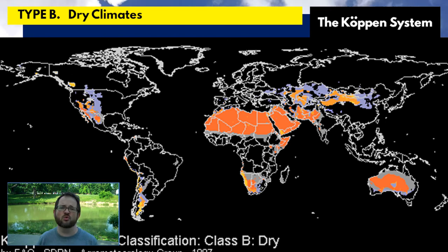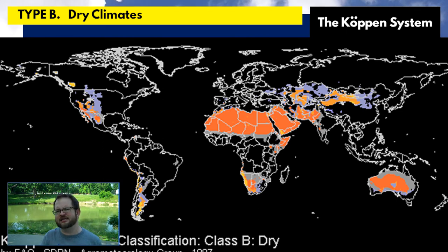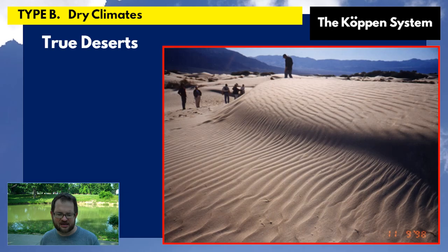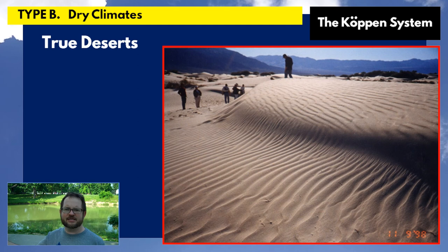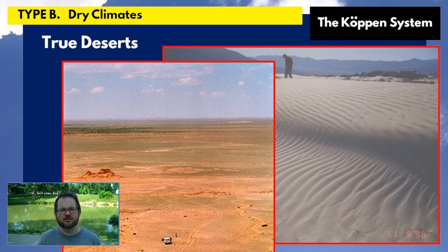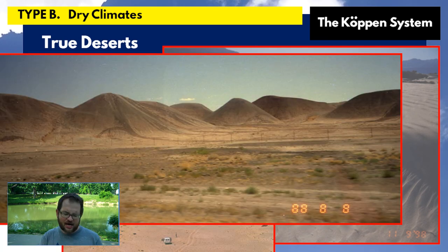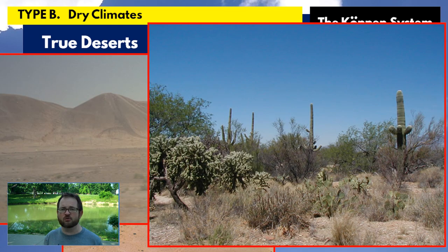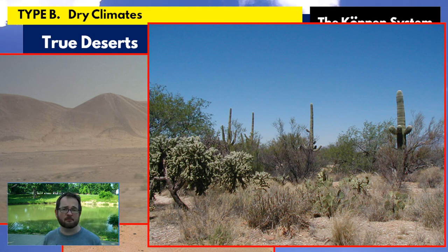There are two main kinds of type B climates. One is the true desert — what you picture when you think of a desert: blowing sand, dunes, practically no plant life, scrubby vegetation, gravel. Maybe cactuses and succulent plants that are very good at conserving water and can live on practically no water at all.